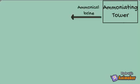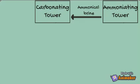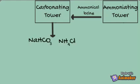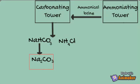Now we shall summarize the whole topic. In the first chamber, the Ammoniating Tower, we provide sodium chloride, water, and ammonia. This mixture is called ammoniacal brine. This ammoniacal brine is fed into the Carbonating Tower, where carbon dioxide is passed through, producing sodium bicarbonate and ammonium chloride. This sodium bicarbonate is then converted to sodium carbonate, which is our required product.